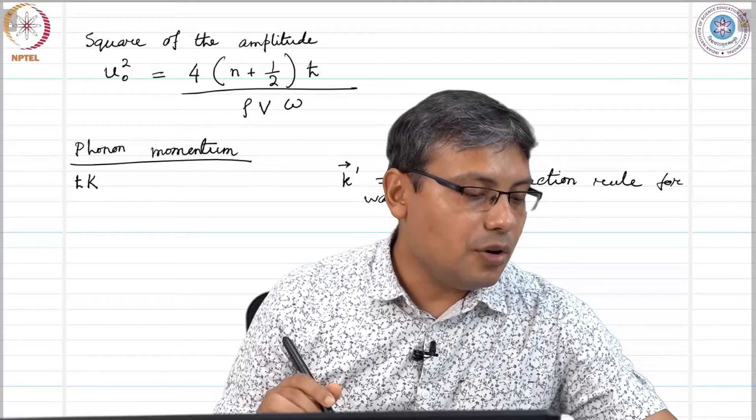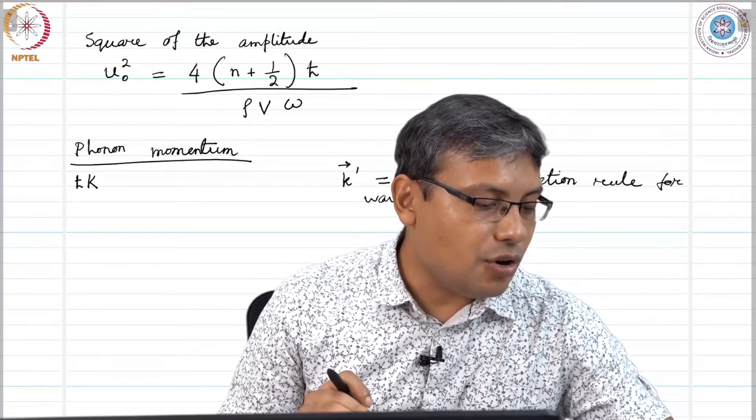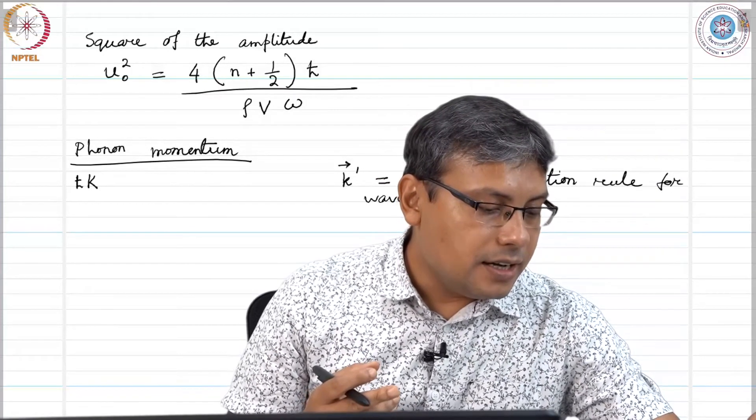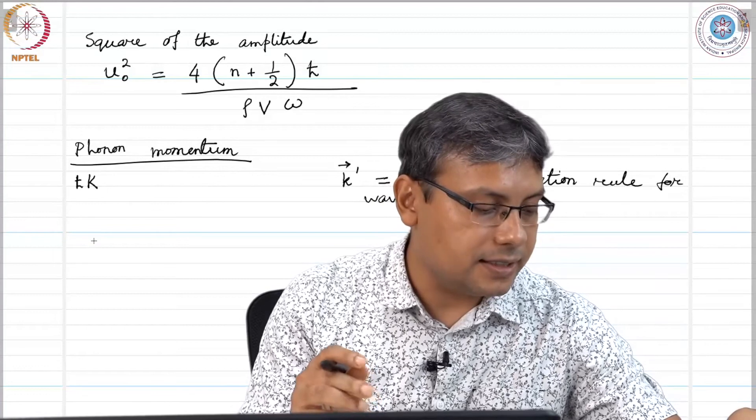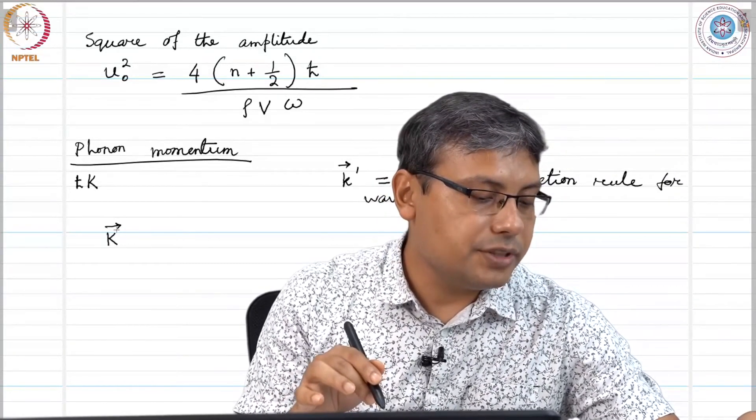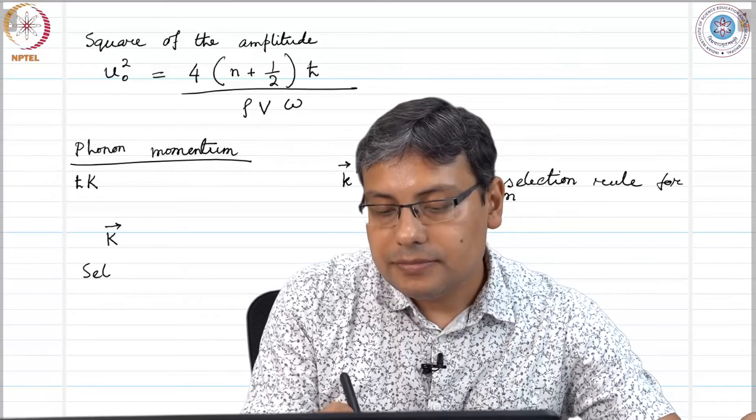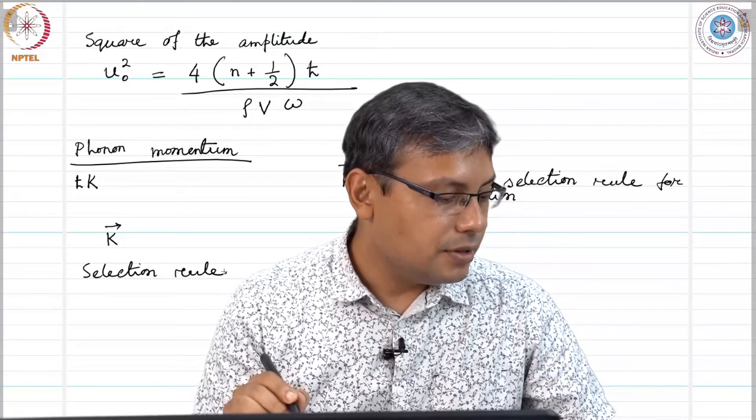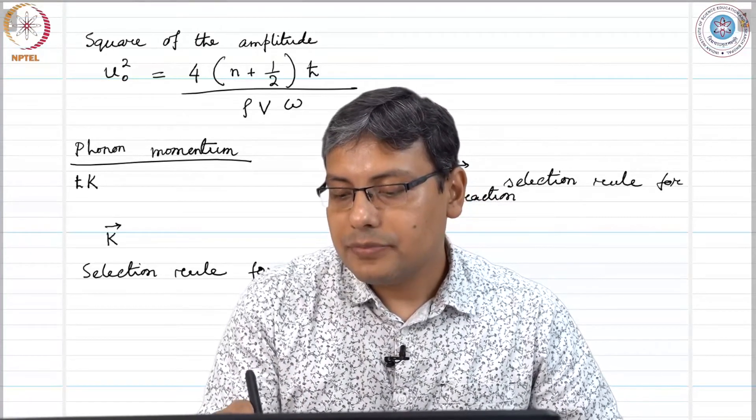The true momentum of the whole system is always rigorously conserved. That means if the scattering of a photon is inelastic that creates a phonon of wave vector capital K. If there is a photon that scatters inelastically creating a phonon of wave vector capital K, remember we are talking about phonons with wave vectors capital K and electrons with wave vectors small k.